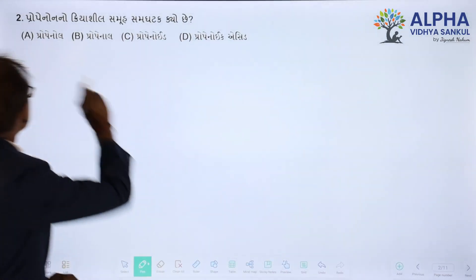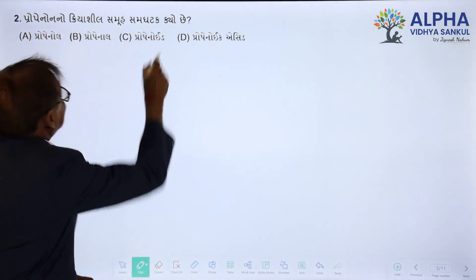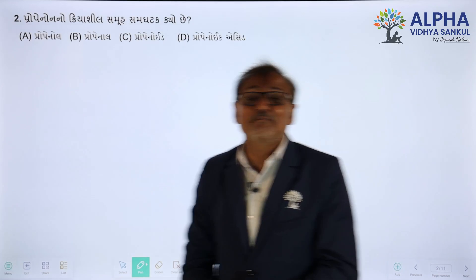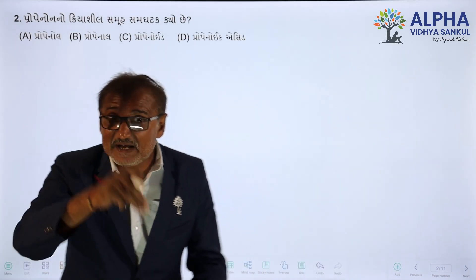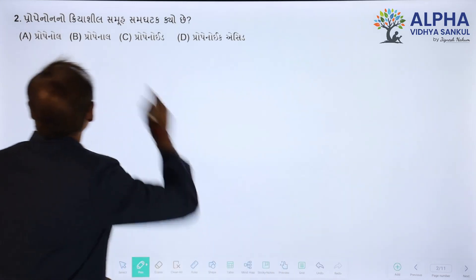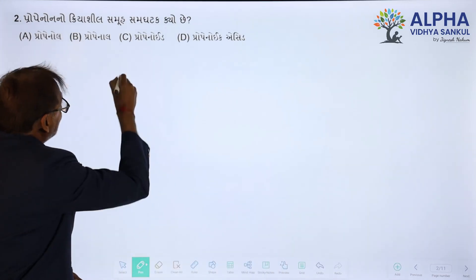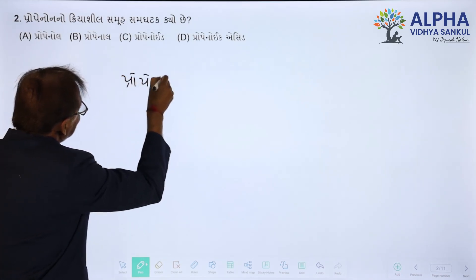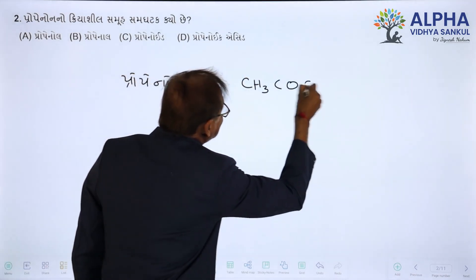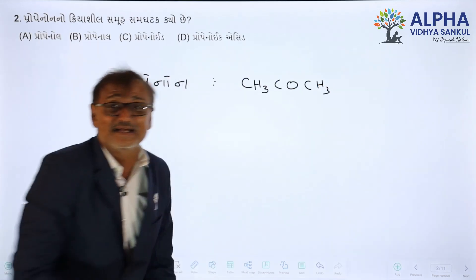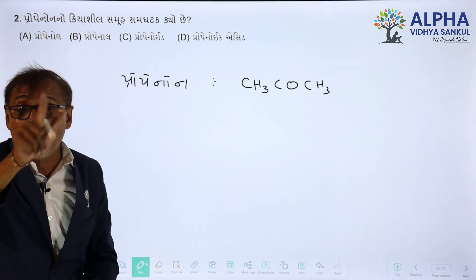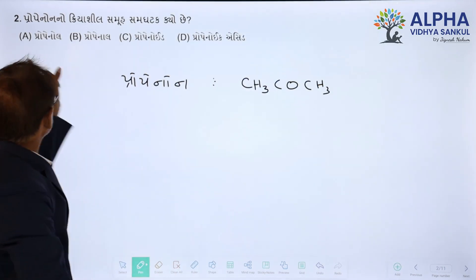Namaskar Vidyarthi Mitro. Propenone no kriyasi samuha — what are the components? You have asked deeply about propenone. Propenone: its chemical formula is C3H6O. It is used as a nail polish remover. It belongs to the ketone class — it is a ketone.